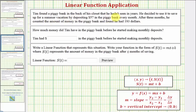Tim found a piggy bank in the back of his closet that he hadn't seen in years. He decided to use it to save up for a summer vacation by depositing $57 in the piggy bank every month, and after three months he counted the amount of money in the piggy bank and found he had $193.